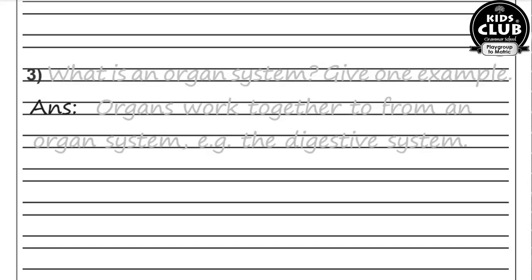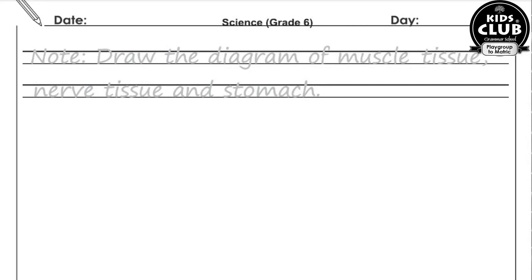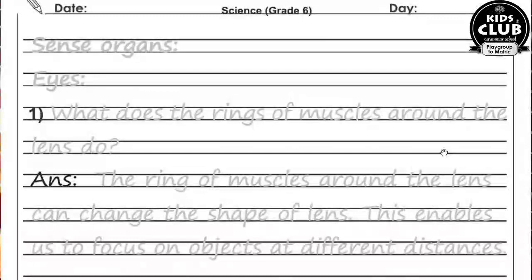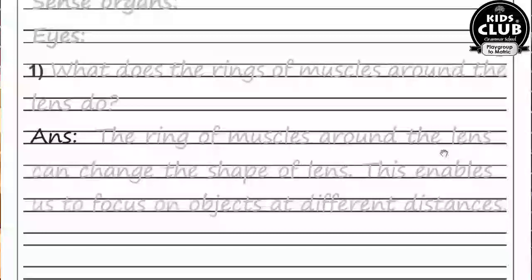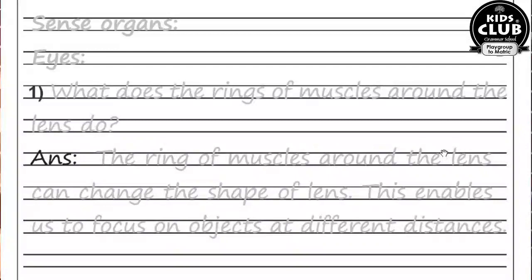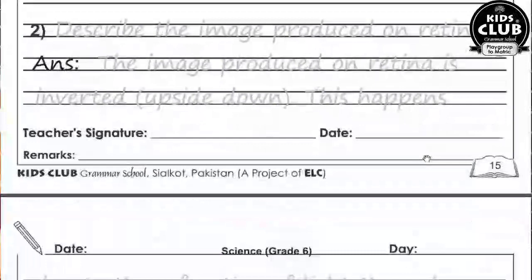Draw the diagram of muscle tissue, nerve tissue, and stomach from the science book. Sense Organs — Eyes. Question number one: What does the ring of muscles around the lens do? The ring of muscles around the lens can change the shape of the lens. This enables us to focus on an object at different distances.